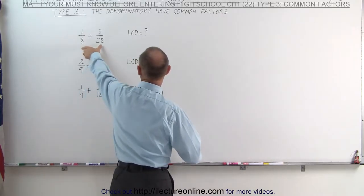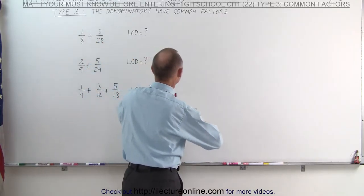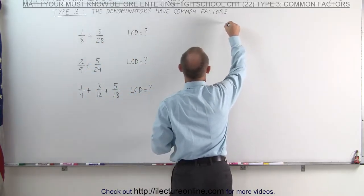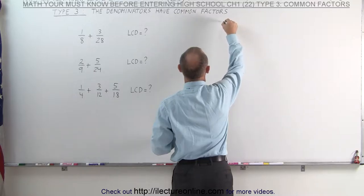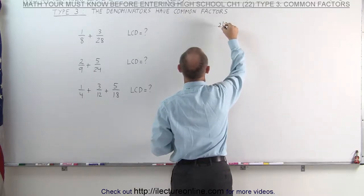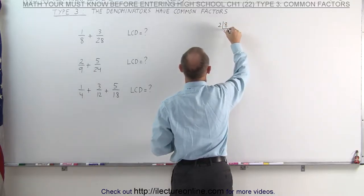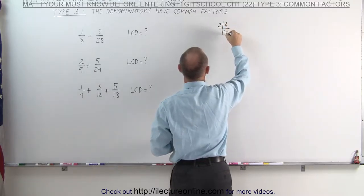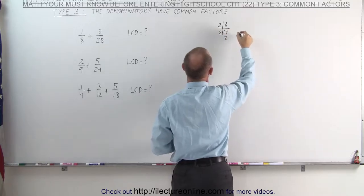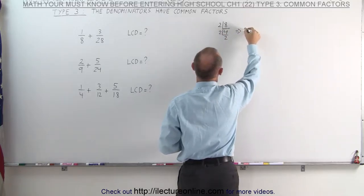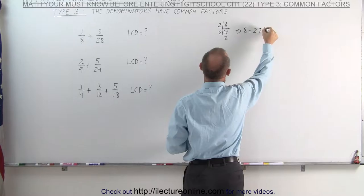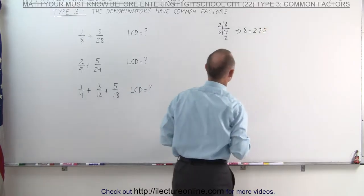We'll take the first two fractions right here. We take the first denominator, 8, and we divide it by the lowest prime number, 2, which gives us 4. We can divide that by 2, which gives us 2. In other words, 8 can be written as 2 times 2 times 2.